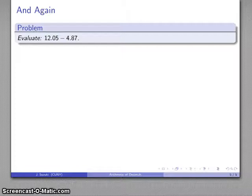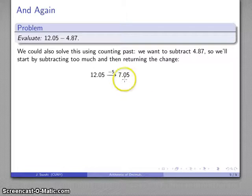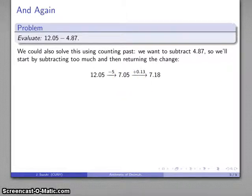I can do that in an entirely different way, 12.05 minus 4.87. I can use this using counting past, and say I want to subtract 4.87, so I'll start by subtracting too much and returning the change. So here 12.05, I'll subtract 5, I'll subtract more than this amount, and that takes me down to 7.05, except this time I'll return that 13 hundredths that was too much, and that takes me to 7.18. And so my difference, 12.05 minus 4.87, is going to be 7.18.